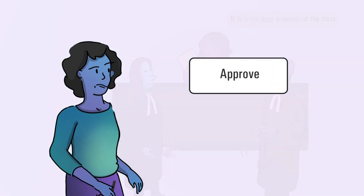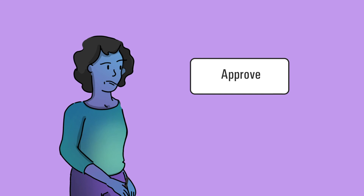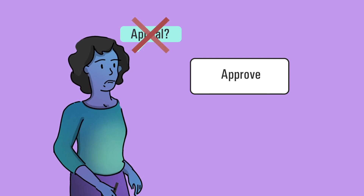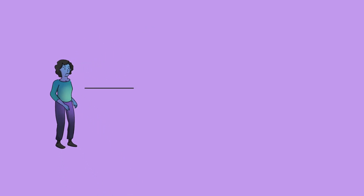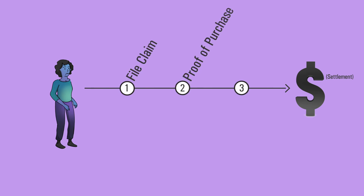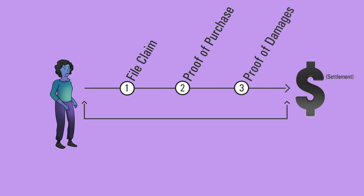Most settlements are approved. A class member does not have the right to appeal the judge's decision to approve the settlement. If a judge approves the settlement, Anita is not automatically guaranteed money. She may need to take additional steps, such as filing a claim or sending in proof of purchase or proof of damages. This is called the claims process, and settlements often go through a claims administrator who will facilitate the settlement.